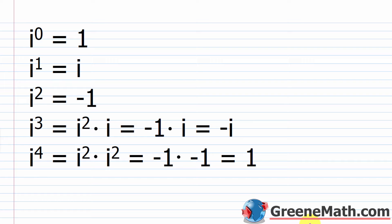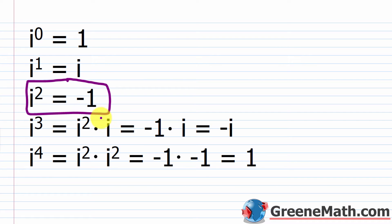The first thing listed here is i to the power of zero is equal to one — just for reference, since any non-zero number raised to the power of zero is always one. From the definition of i, we're given that i squared is equal to negative one. And i to the first power is just equal to i, since any number raised to the power of one is just itself.